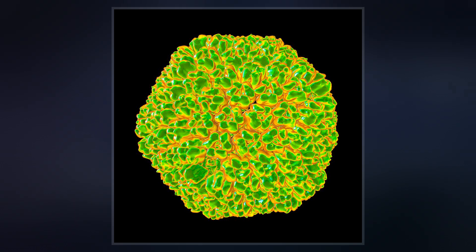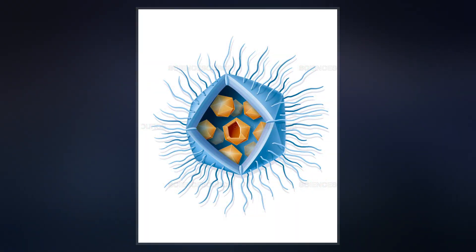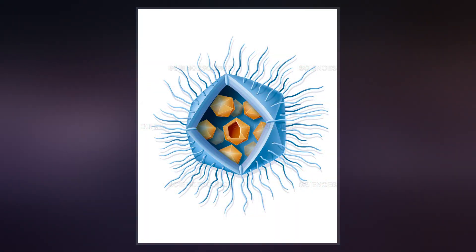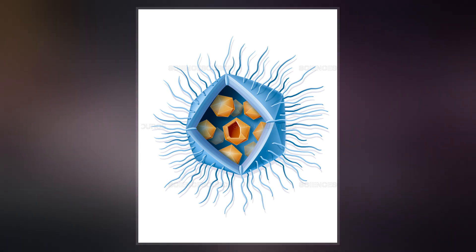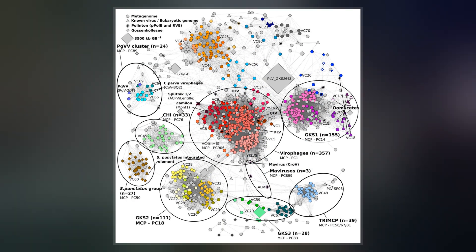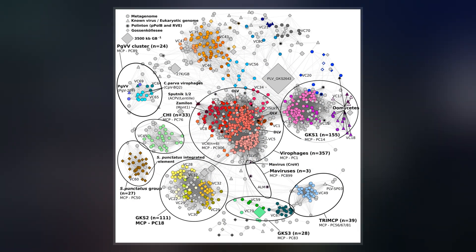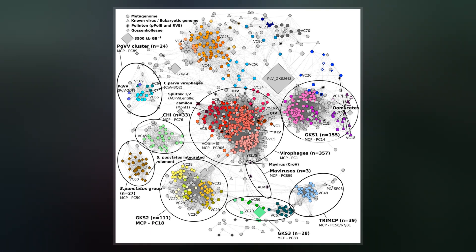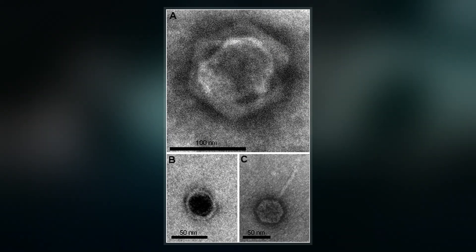All known viraphages are grouped into the family Levitaviridae. The first viraphage was discovered in a cooling tower in Paris, France in 2008. It was discovered alongside its co-infecting giant virus, Acanthamoeba castellanii mamavirus.